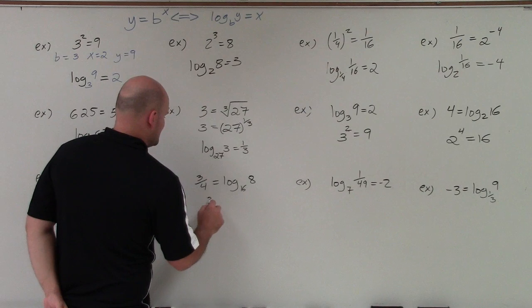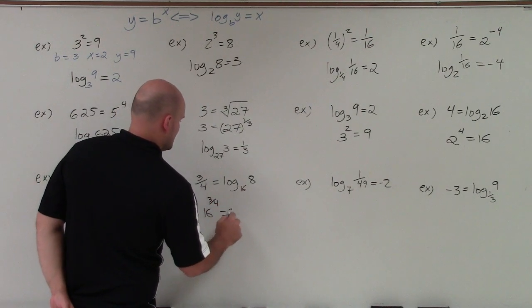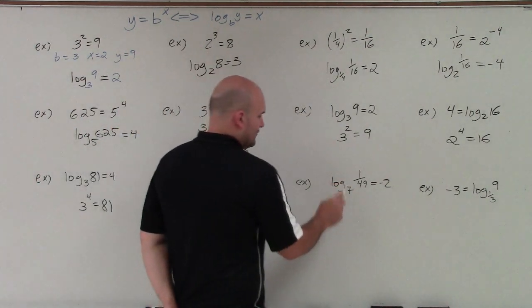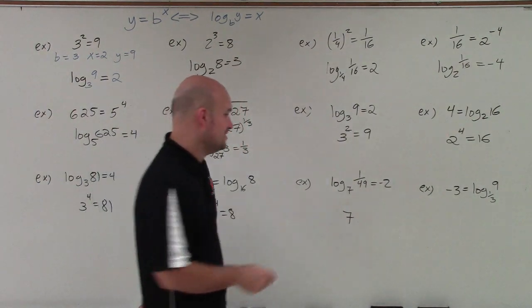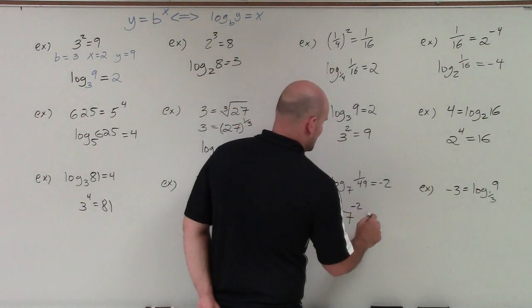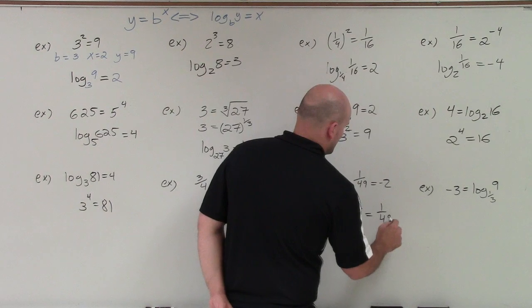Over here, I have 16 to the 3/4 power equals 8. Over here, my base of my logarithm is 7. So that's the base of my exponent. It's going to be 7 to the negative 2nd power equals 1 over 49.